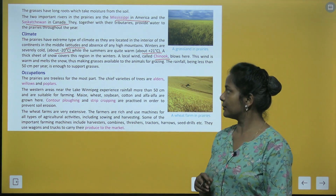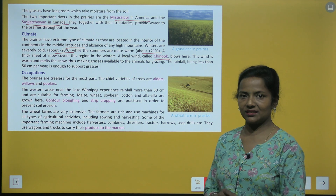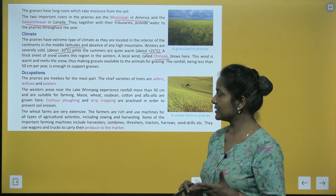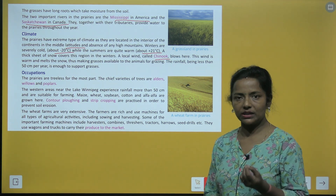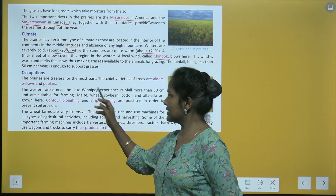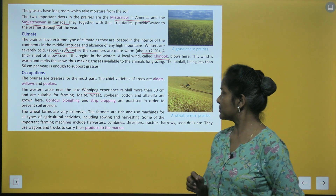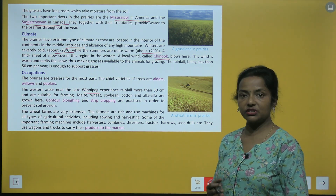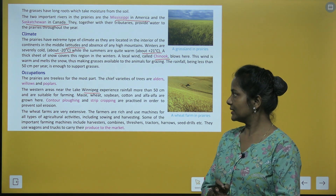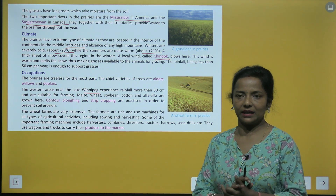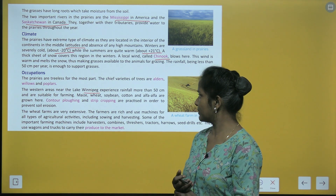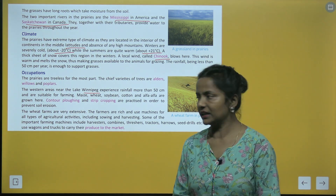Occupations: the prairies are treeless for the most part. The chief variety of trees are alders, willows and poplars. The western areas near Lake Winnipeg experience rainfall more than 50 cm and are suitable for farming. Maize, wheat, soybean, cotton and alfalfa are grown here.